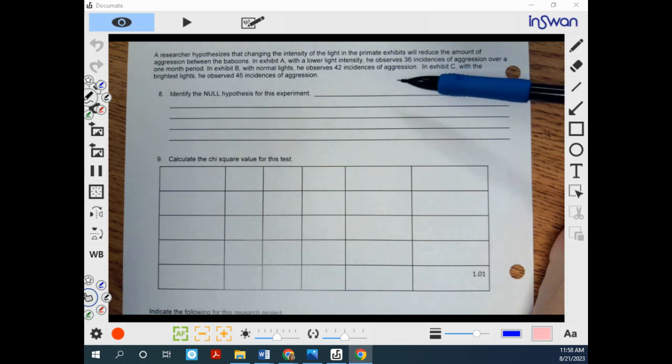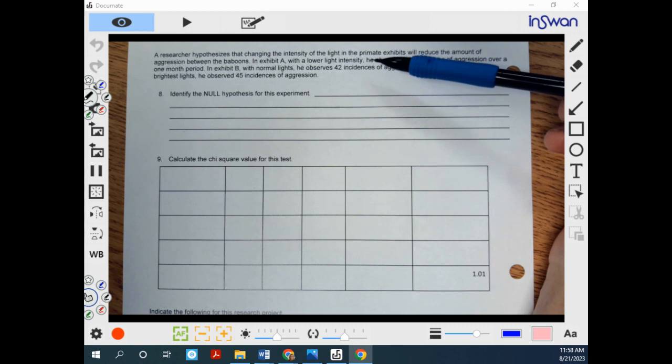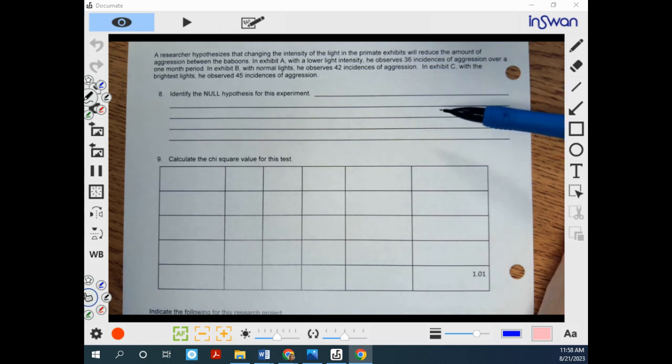So they set up three different areas for them. Exhibit A has a lower light intensity. Exhibit B, just the normal standard that they've been using. And then exhibit C with the brightest lights. And it also indicates how many signs or incidences of aggression happen in each of those exhibits.